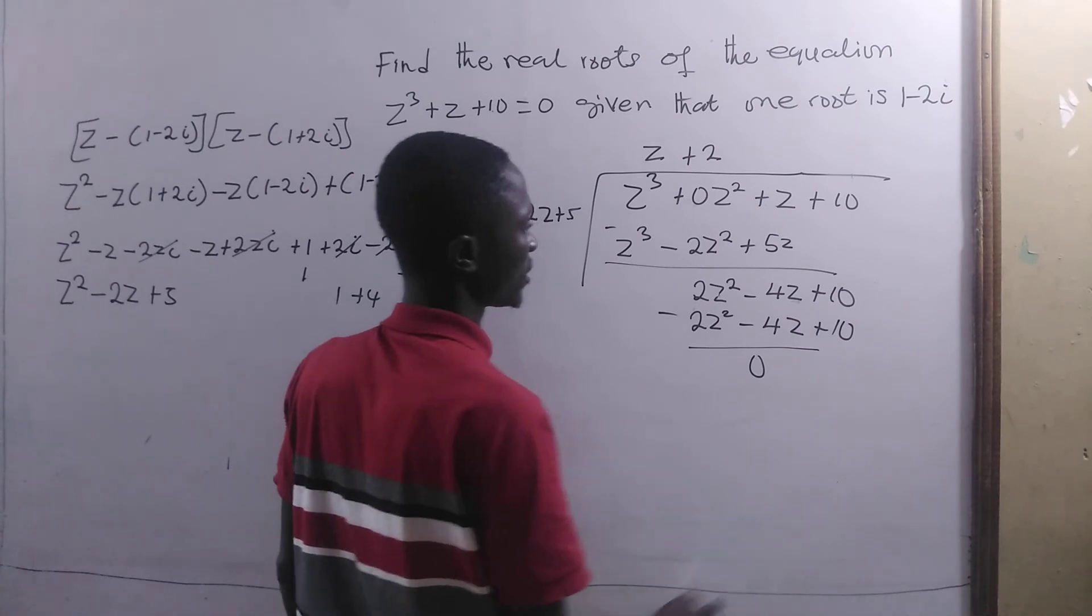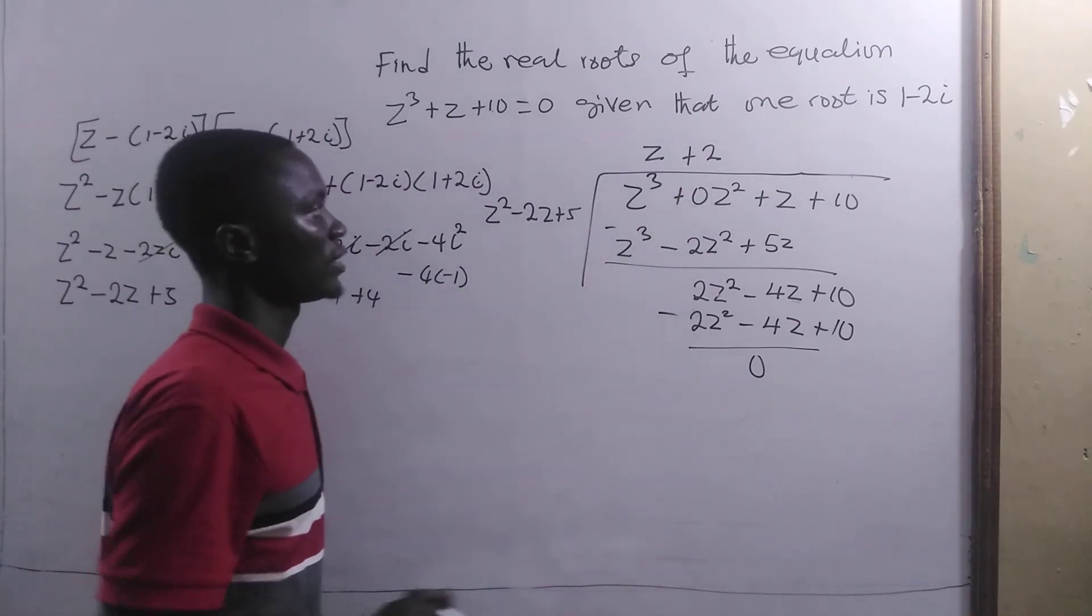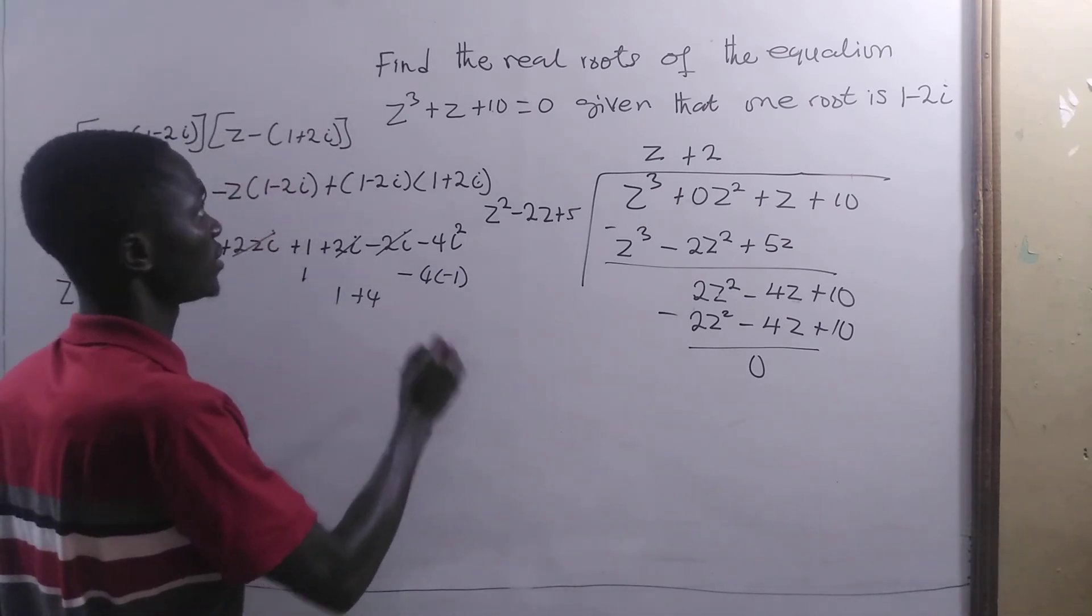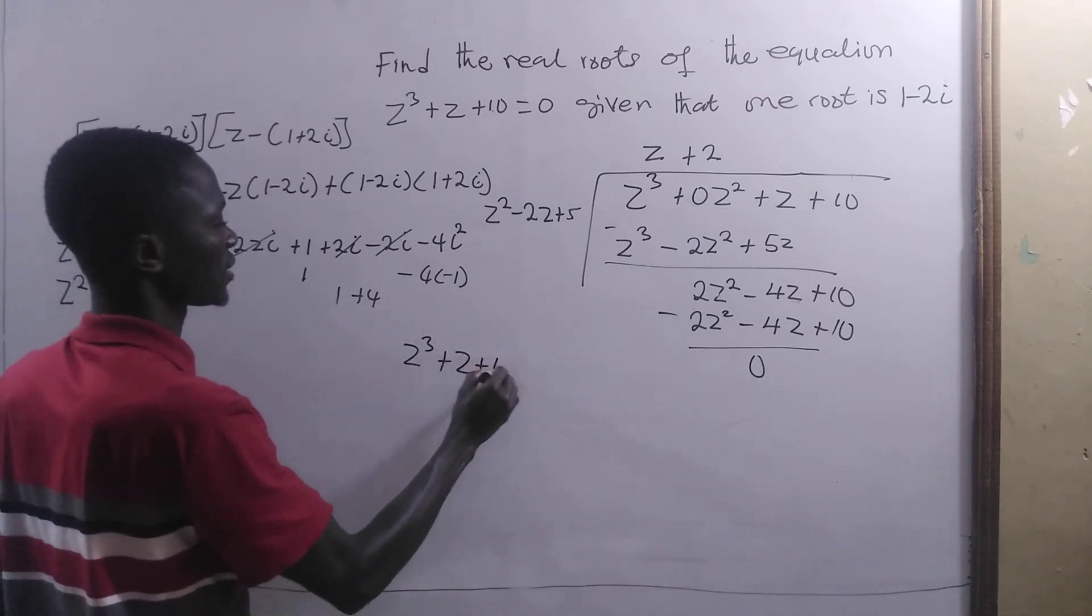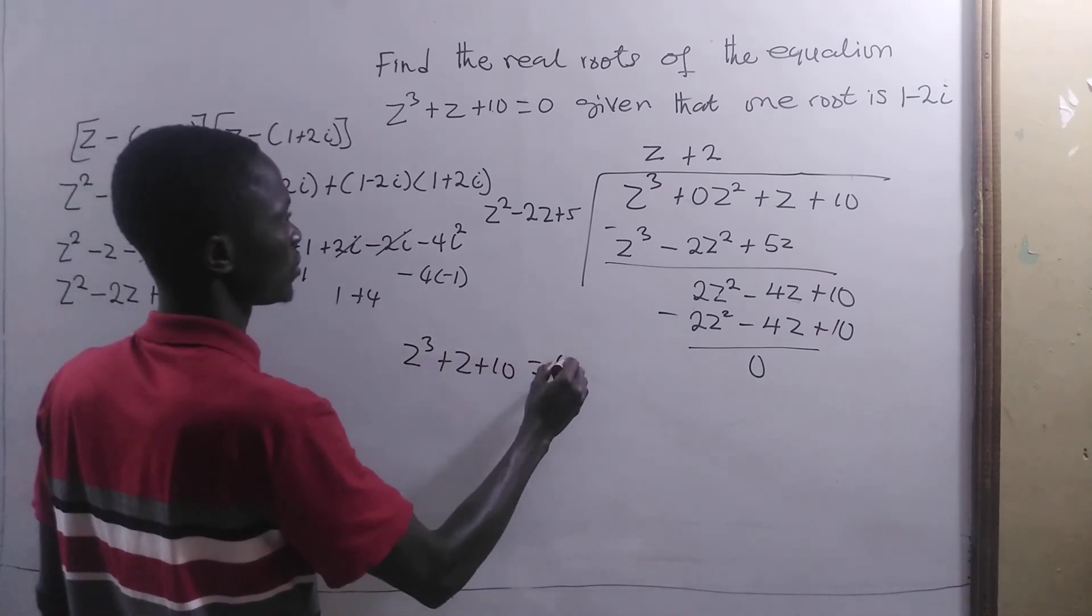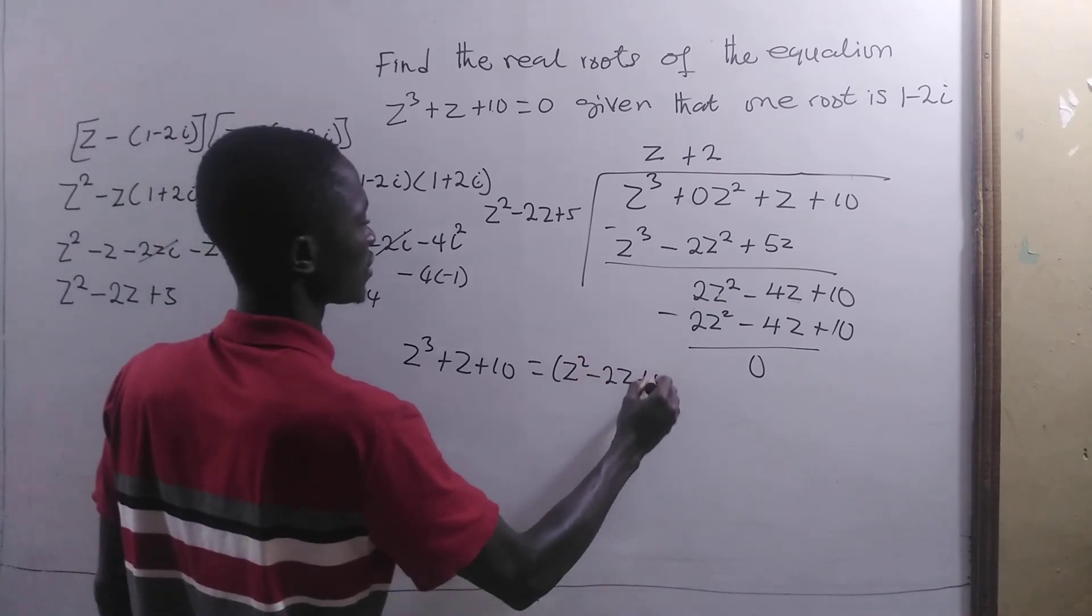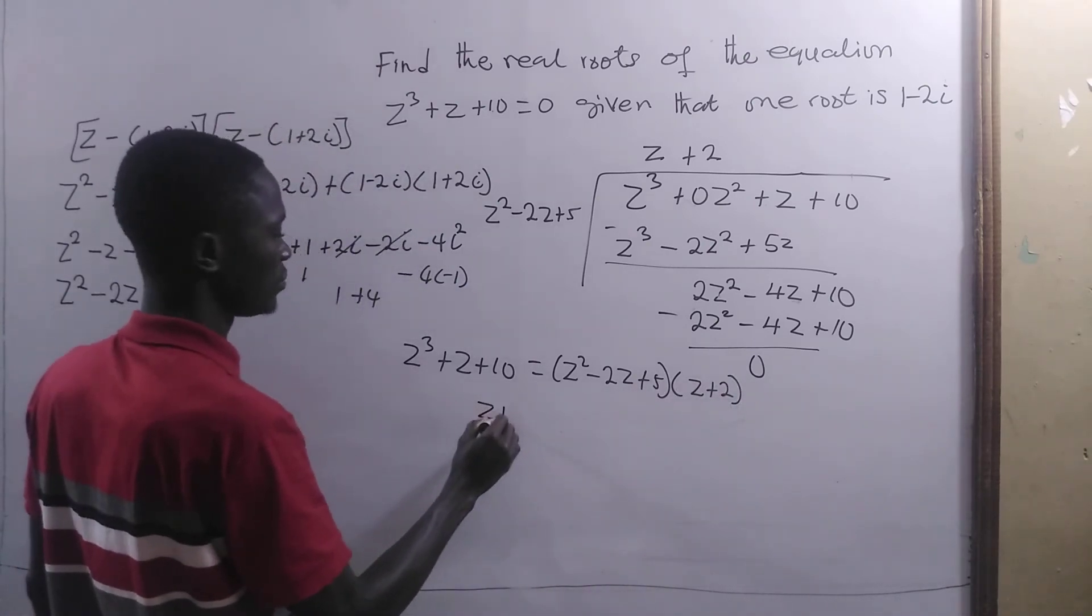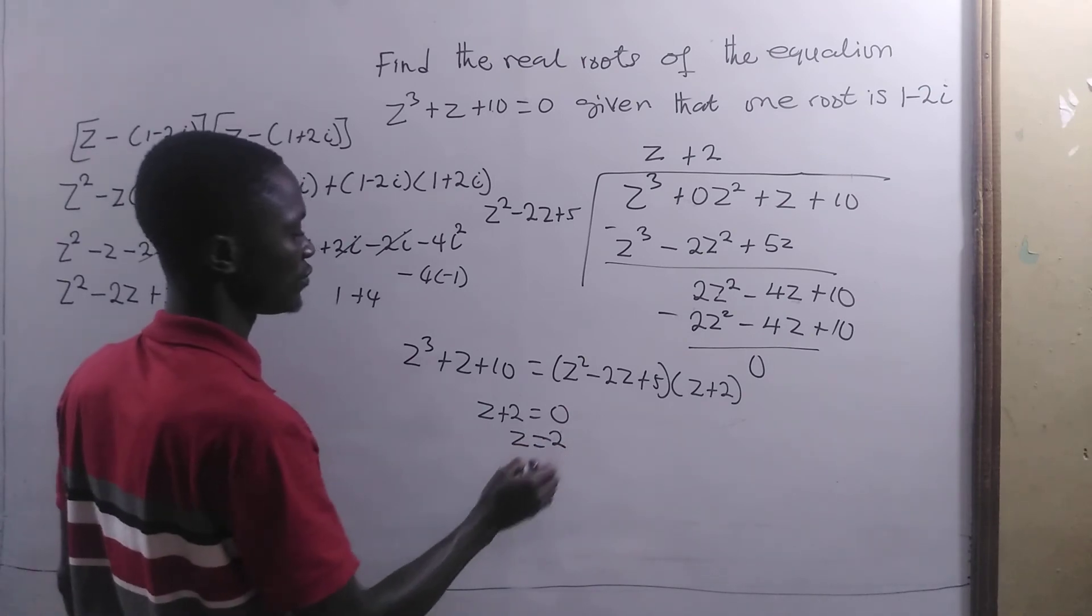If we subtract the whole of this, we get zero, so it means that we are going to have this one as the other root, that is z + 2. Here we are going to have z³ + z + 10 = (z² - 2z + 5)(z + 2). And here we have z + 2 = 0, z = -2.